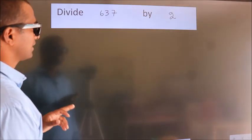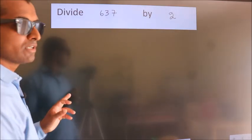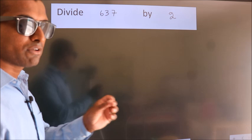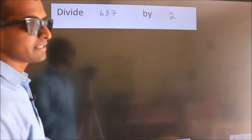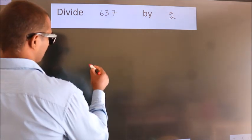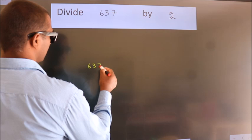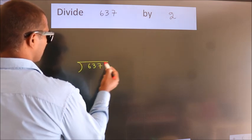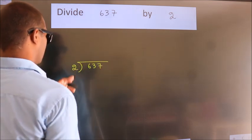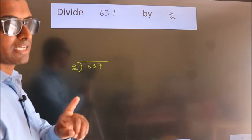Divide 637 by 2. To do this division, we should frame it in this way: 637 here, 2 here. This is your step 1.